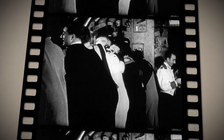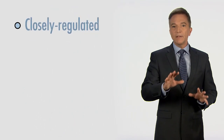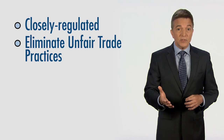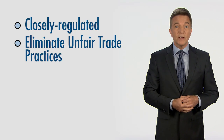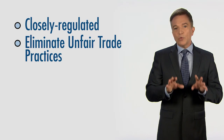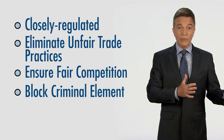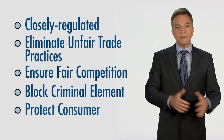Fifteen years after Prohibition began, it was repealed with the enactment of the 21st Amendment. Still, Congress wanted to avoid the problems that led to and were caused by Prohibition. Specifically, they wanted a closely regulated industry, free of certain unfair industry practices and the excess consumption those practices caused. They also wanted to ensure fair competition, keep the criminal element out of the alcohol beverage industry, and protect the consumer.